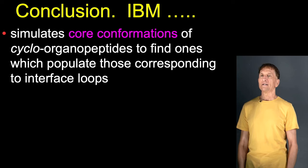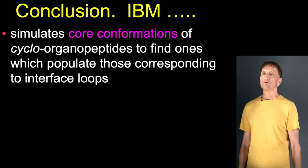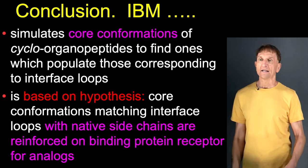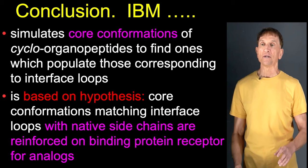IBM simulates core conformations of cycloorganopeptides to find ones which populate those corresponding to interface loops, because what we want to do is mimic or disrupt protein-protein interactions or simply find a ligand that binds on the surface of a protein. It's based on the hypothesis that core conformations matching the interface loops can be simulated in solution using an all-Ala peptide. When we actually find one that overlays well, we make a similar cycloorganopeptide except it contains the native side chains corresponding to those which bind the protein receptor at that loop region.